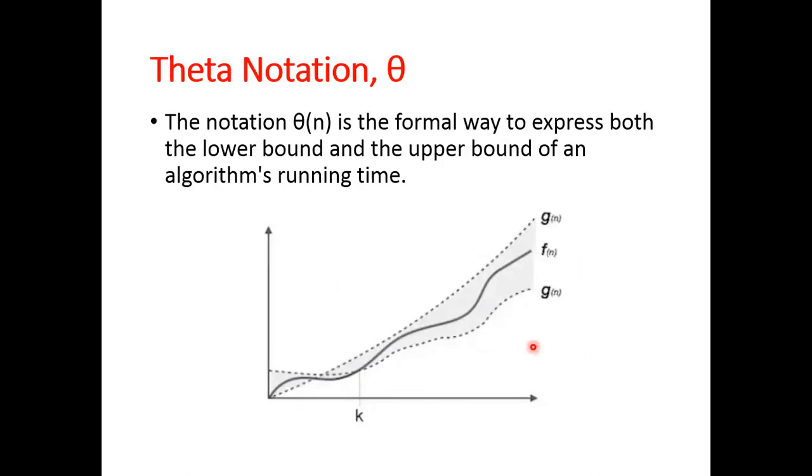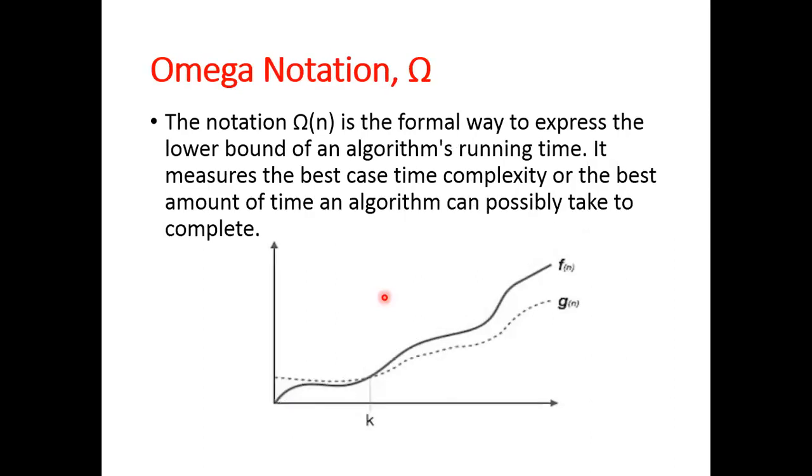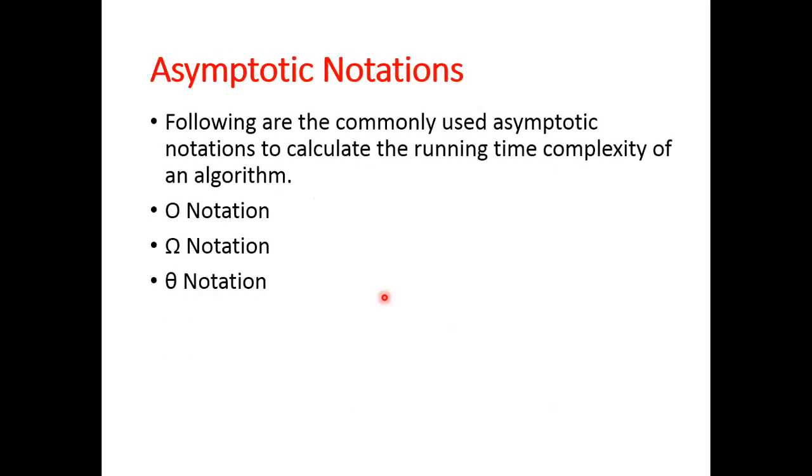And third one is the Theta notation. Theta notation θ(n) is the formal way to express both the lower bound and the upper bound of an algorithm's running time. Basically, it calculates the average computation. Big O notation works on worst case, Omega notation works on best case, and Theta notation works on average case complexity calculation. These three are related with asymptotic notation.